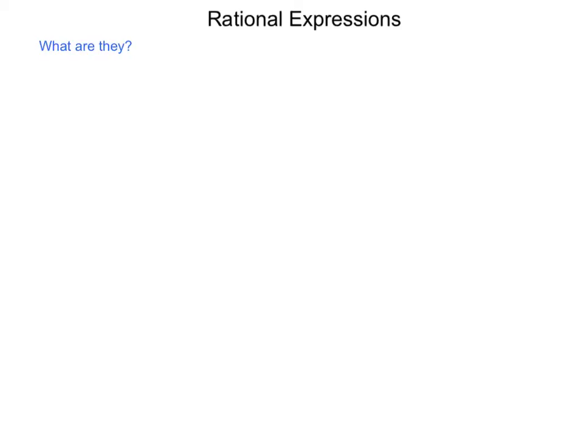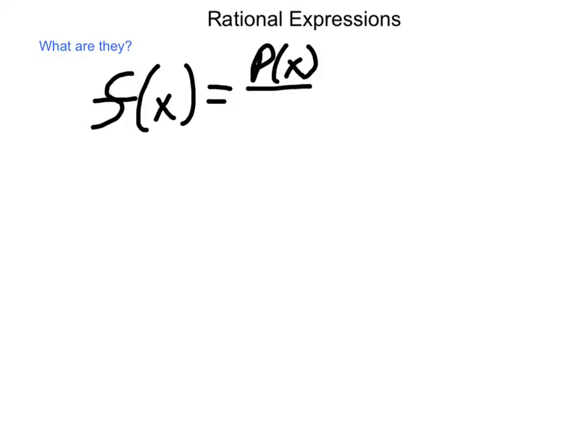Our next portion of study in rational functions is going to be working with rational expressions. For starters, what is a rational expression? A rational expression, or when we get to rational equations in the form of f of x, is anything that can be written as a ratio of two other polynomial functions. We'll call them p of x and q of x.